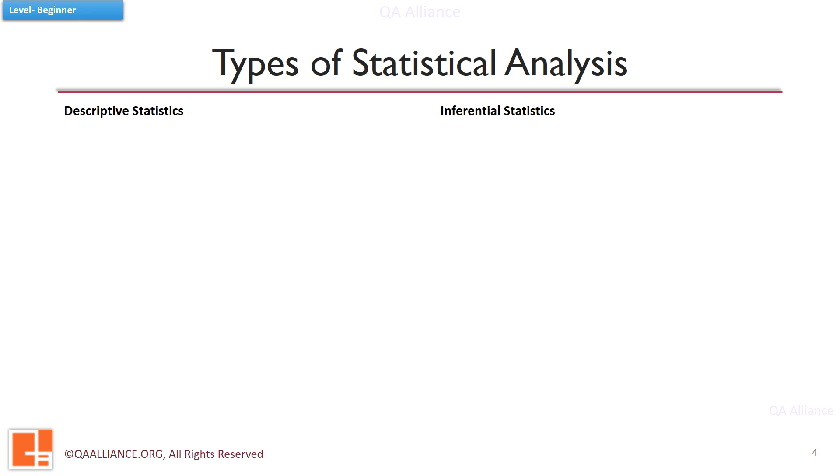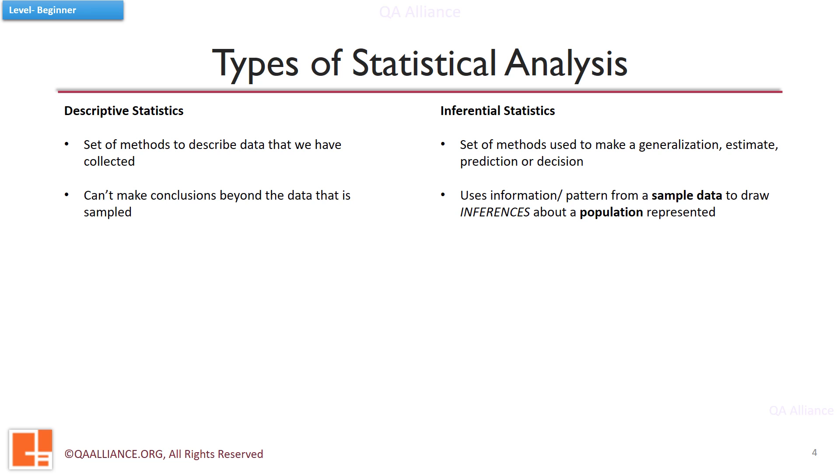Descriptive statistics and inferential statistics. Descriptive statistics is a set of methods to describe the data that is collected. If we have collected 100 data points, the descriptive statistics will provide a summary of those 100 data points. The other type is inferential statistics, which is used to make generalization, estimates, and predictions based on the collected data. It uses information, pattern from a sample data to draw inferences about a population represented.